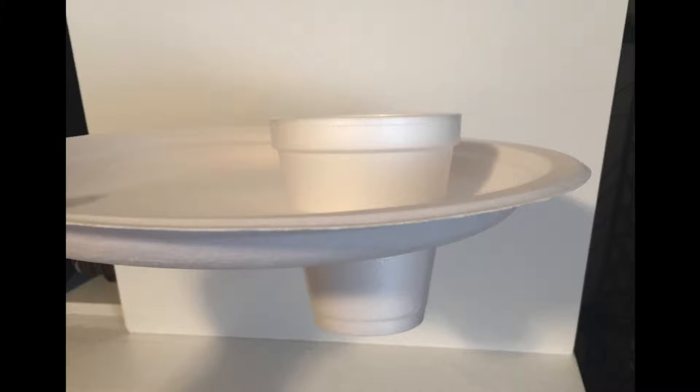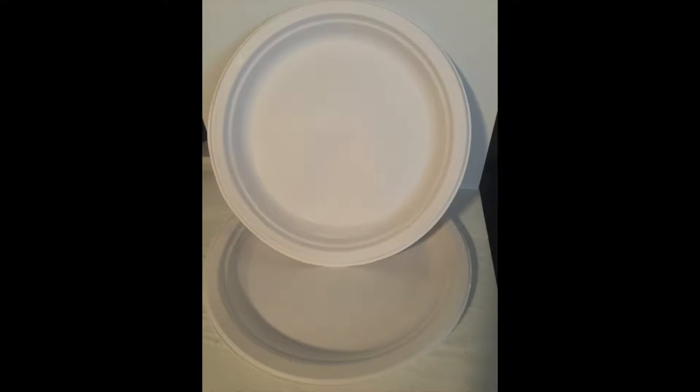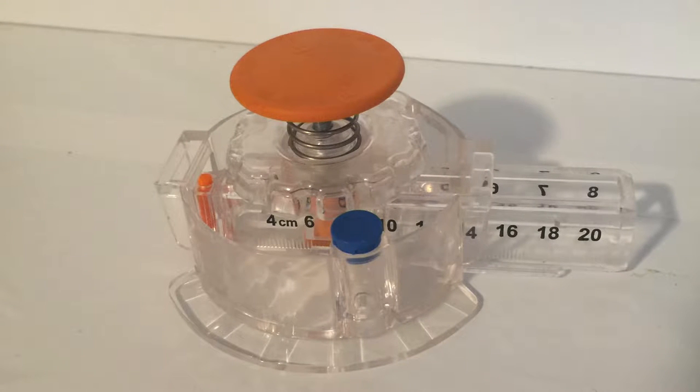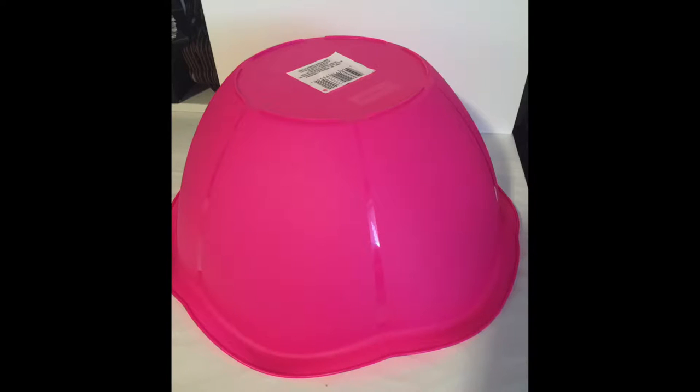You're going to use a Chinette paper plate and a Fiskars circle cutter, then a tall bowl. I just got this at Dollar Tree, so any kind of sturdy bowl that you'll put this foam board in. You'll cut a circle for the bottom of it.